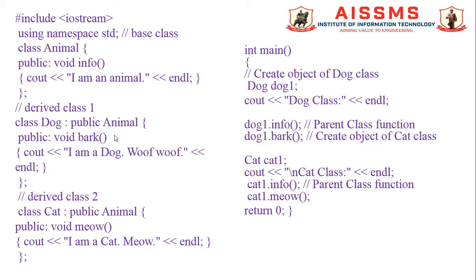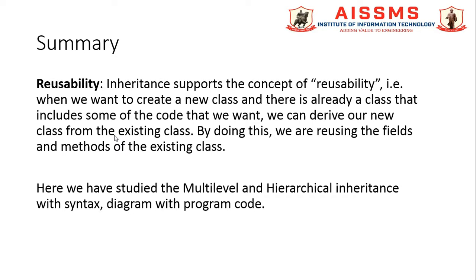For a dog, the voice is barking and the property for the cat is meow. At the end of this program, in main function, we call the meow voice or the barking voice with cat1.info, dog1.info, dog1.bark, cat1.meow. These are the special characteristics of hierarchical inheritance.